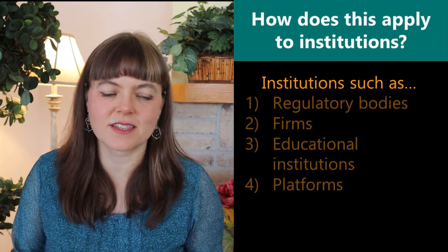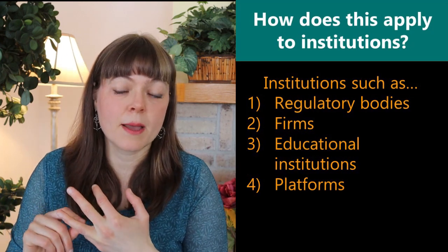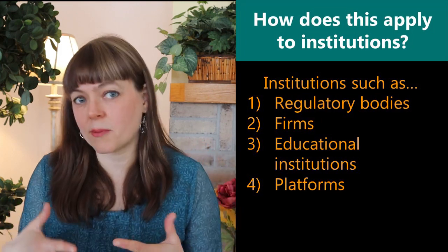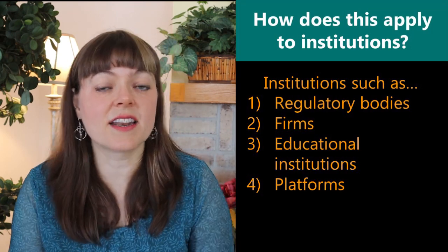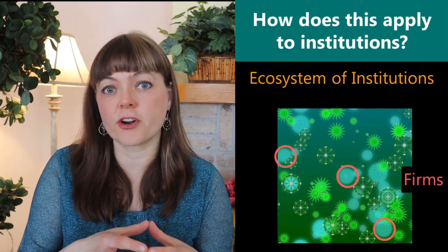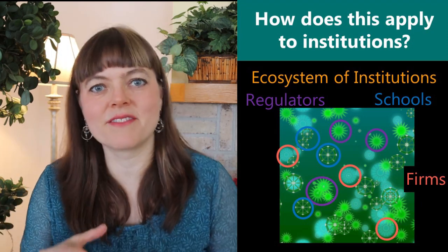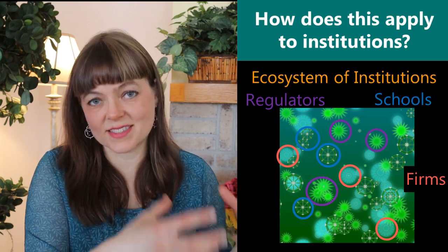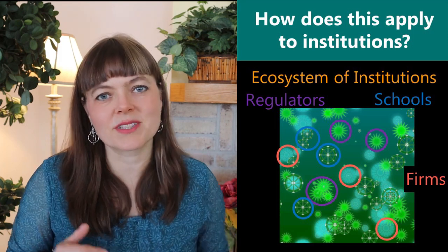How does this apply to institutions? When I'm talking about institutions, it's a lot of different types — regulatory bodies, firms, educational institutions, platforms, and markets. Platforms are any online website that is a place for people to come together and exchange and talk about ideas. These are foundational institutions in our society, and they exist in an ecosystem where they are on one hand separate from each other, but they have relationships, they communicate, they affect each other. Institutions can succeed, do a good job of their mission, or they can fail — and when they fail, they sort of lose out in the evolutionary environment.